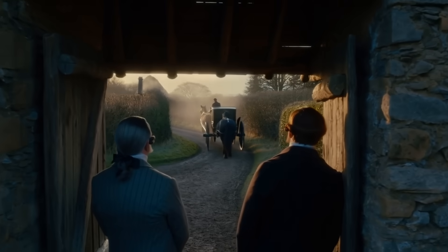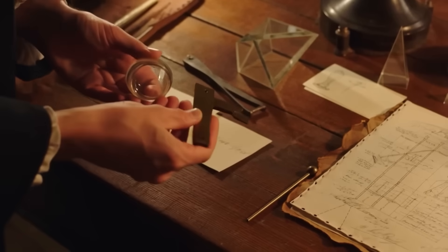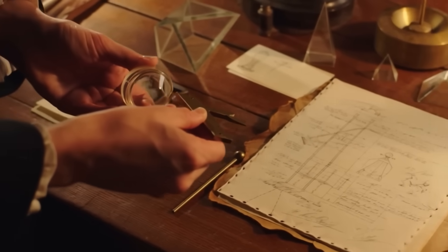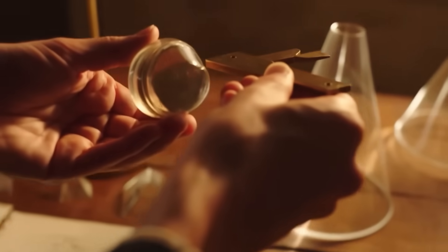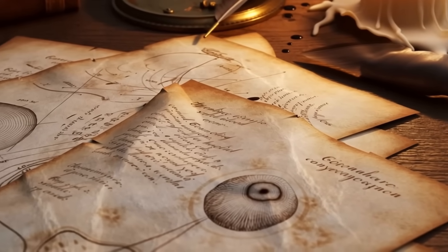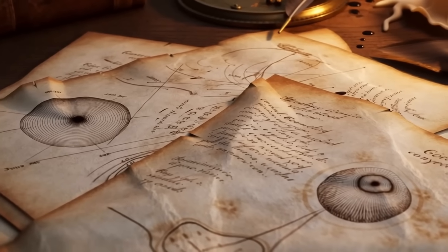At 14, he left home to apprentice under a London physician. While his peers were still in schoolyards, Young was dissecting eyes, grinding lenses, and sketching the mechanics of sight. He wanted to understand how the eye bends light, how the brain interprets focus, and why we see color the way we do.